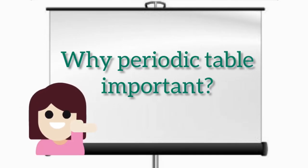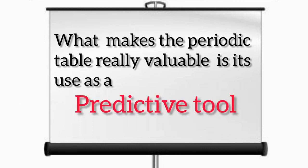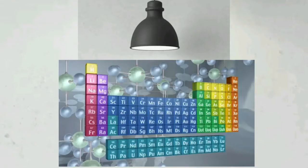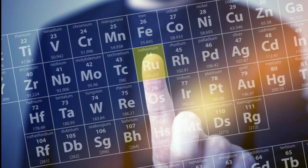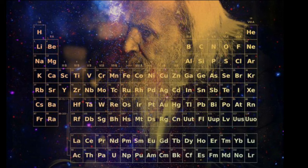Why is the periodic table important? The periodic table is the most powerful tool in chemistry for organizing chemical information. Without it, chemistry would be a chaotic, confusing jumble of random observations. What makes the periodic table really valuable is its use as a predictive tool. You can predict a lot of the chemical behavior of an element if you know where it is on the periodic table. From the periodic table, we not only get technical information about the elements — we also get pieces of history, because each element has a name with some significance.